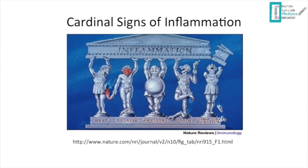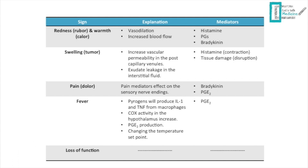From the previous slides we can now explain the cardinal signs of inflammation. Redness and warmth (rubor and calor) are caused by vasodilation and increased blood flow, mediated by prostaglandins, histamine, and bradykinin. Swelling results from edema due to tissue damage, mast cell activation, and histamine granule release. Pain is caused by bradykinin and prostaglandin E2.